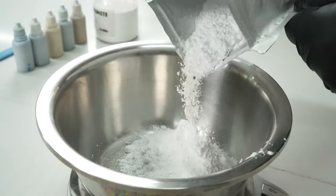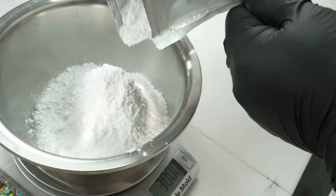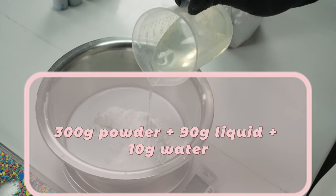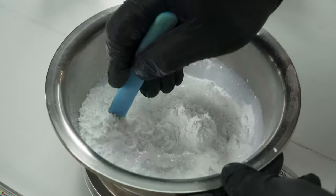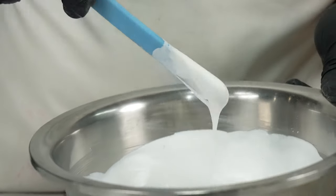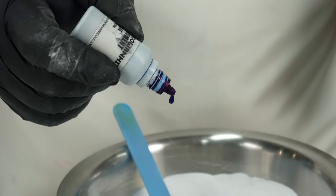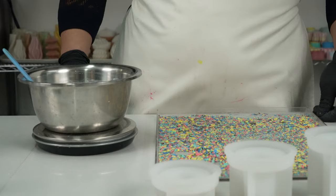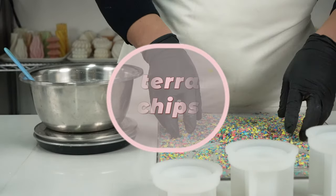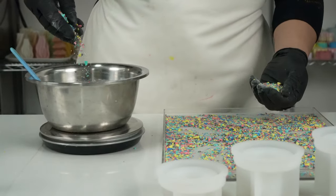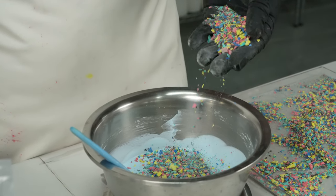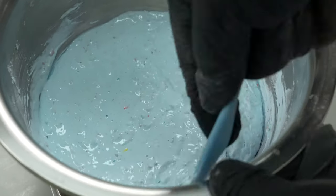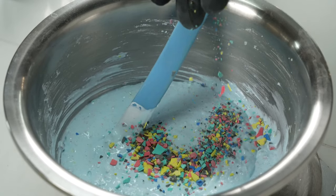To make candlesticks with buonite, you'll need 300 grams of powder, 90 grams of buonite liquid, 10 grams of water, one drop of blue pigment, and 70 grams of terrazzo fragments. Continue stirring until the mixture is well combined. Next, add the terrazzo fragments that you've prepared earlier into the mixture. When adding the fragments, be sure to add them slowly and stir gently to prevent air bubbles from forming. Air bubbles can create weak points in the final product and make it more prone to breaking.